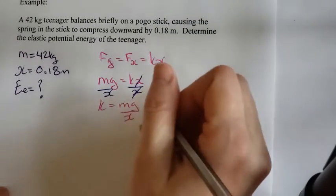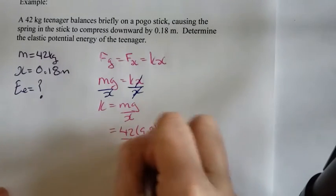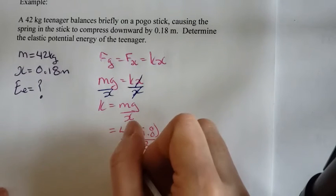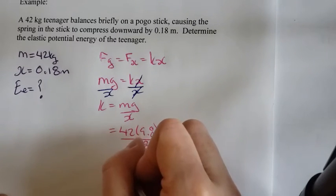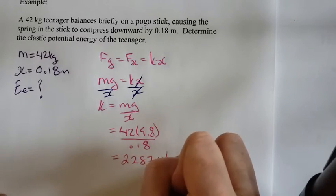We put our numbers in. So it'll be 42 times 9.8 divided by 0.18. And I get 2,287 newtons per meter.